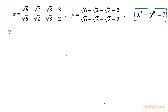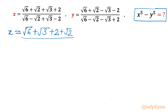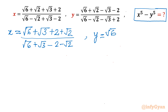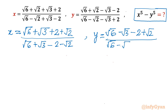Let's get started by rewriting the terms of x and y respectively. For x, the numerator is √6 + √3 + 2 + √2 divided by √6 + √3 minus 2 minus √2. Similarly, y has numerator √6 minus √3 minus 2 plus √2 divided by √6 minus √3 plus 2 minus √2.